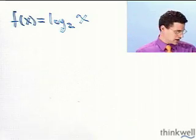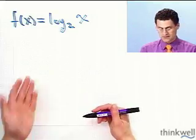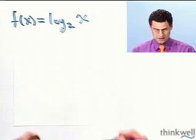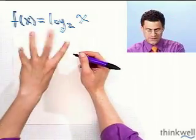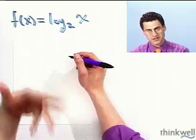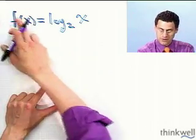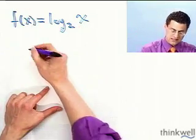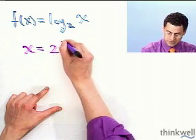Well, one thing we could do is just plot some points and get a sense of what this thing looks like. Now, it may be easier for you to write the converted statement just to help you. So a log is an exponent. That's the exponent that I have to raise 2 to in order to get x. So basically, this would be x equals 2 to the f of x.